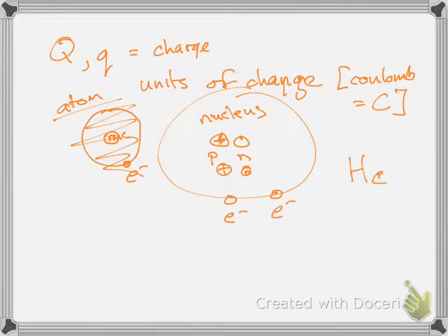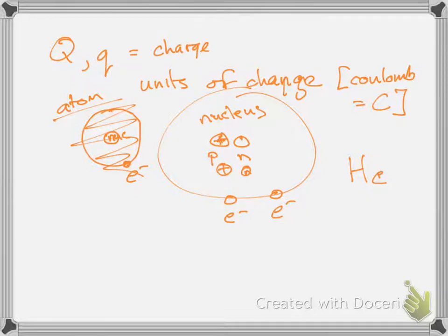Protons and electrons are the fundamental units of charge. Fundamental means you can't get any smaller — but that's a little bit of a lie, because these are the stable charges. You can actually break a proton up into quarks, and quarks are charged particles. For the physics we're doing, we'll treat protons and electrons as the fundamental charges since quarks are not stable by themselves.